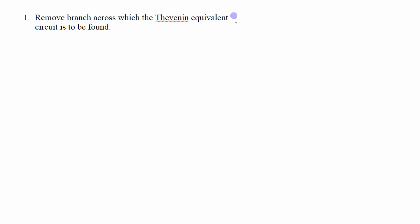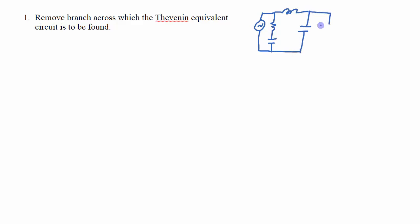Now I want to go through the process of finding the Thevenin equivalent circuit for a given circuit. The first step is to remove the branch across which the Thevenin equivalent circuit is to be found. So if I have a circuit made up of a bunch of components ultimately connected to a load, the first thing I do is remove that branch right here.